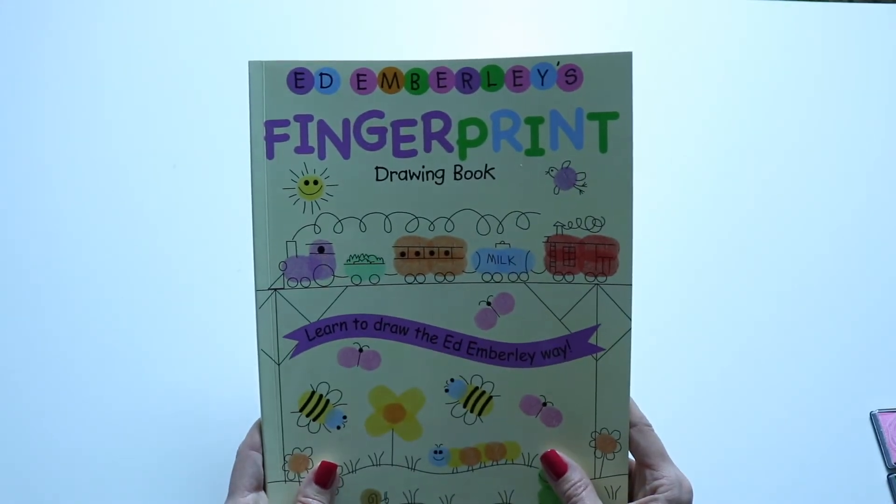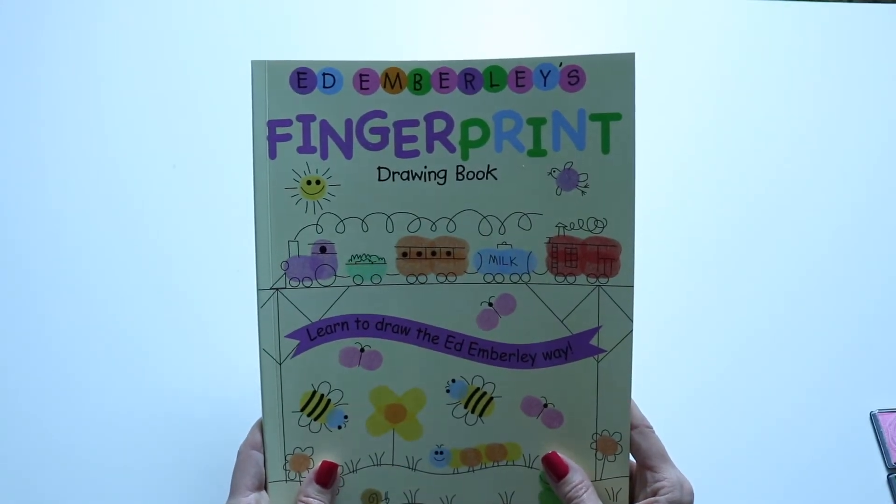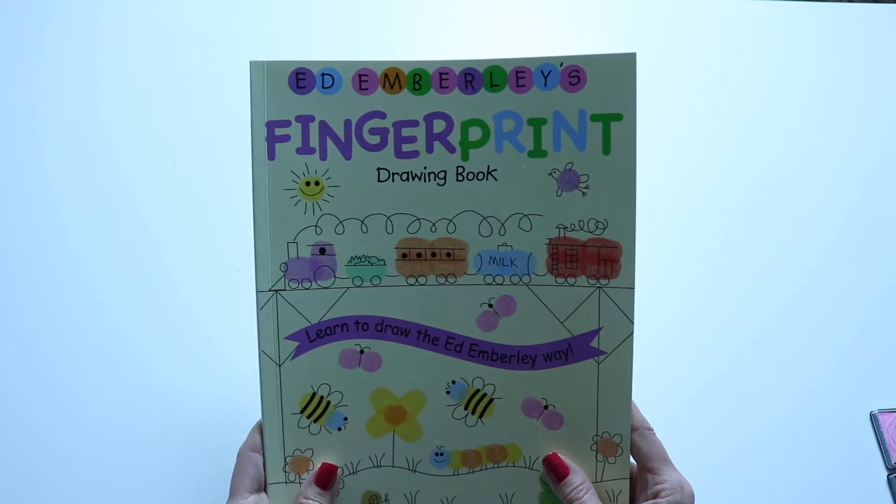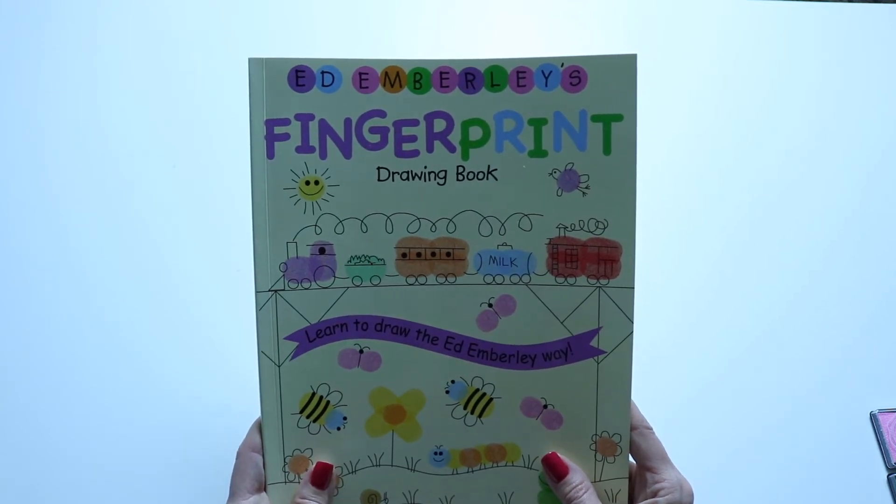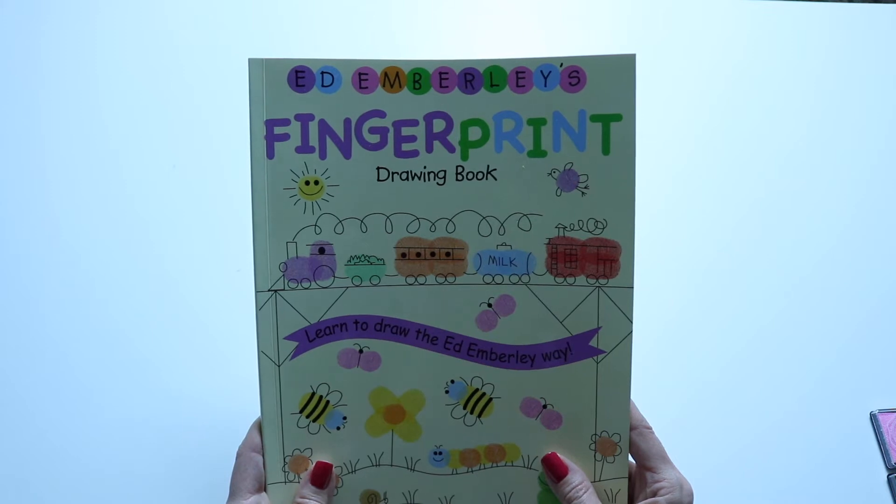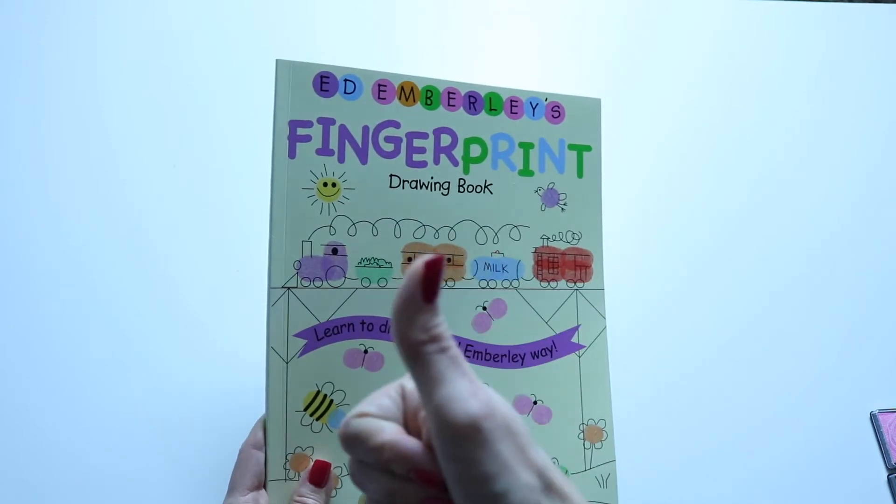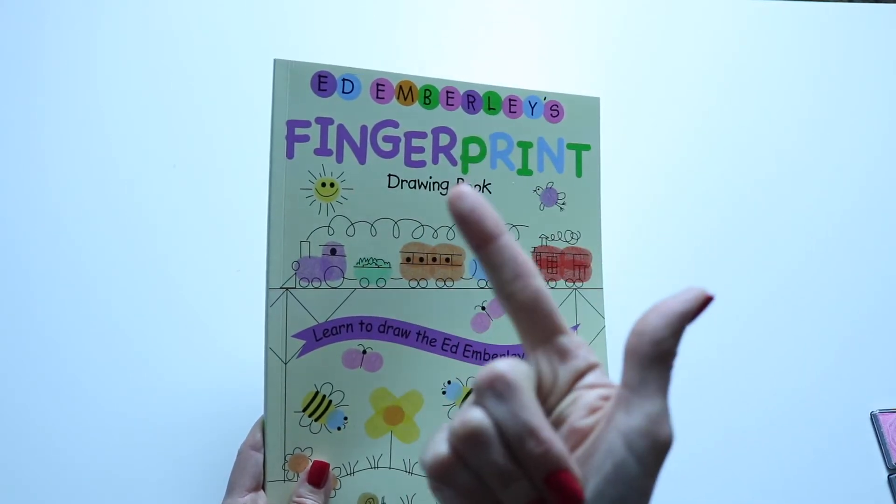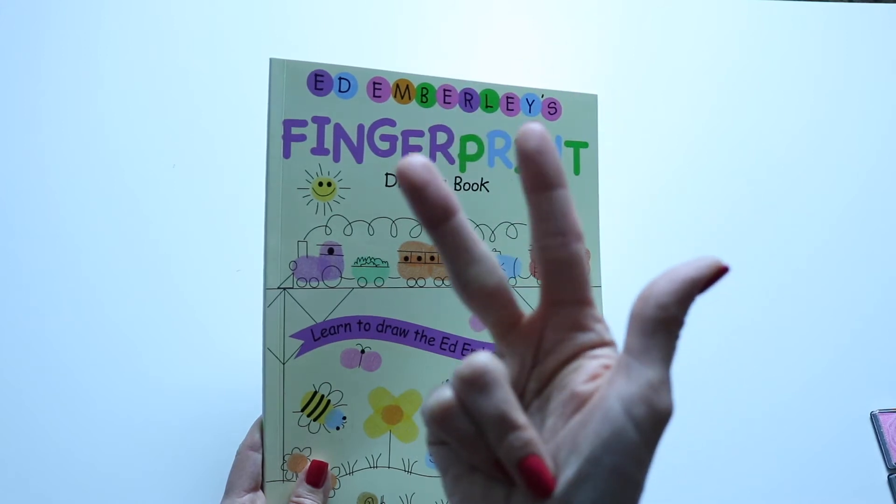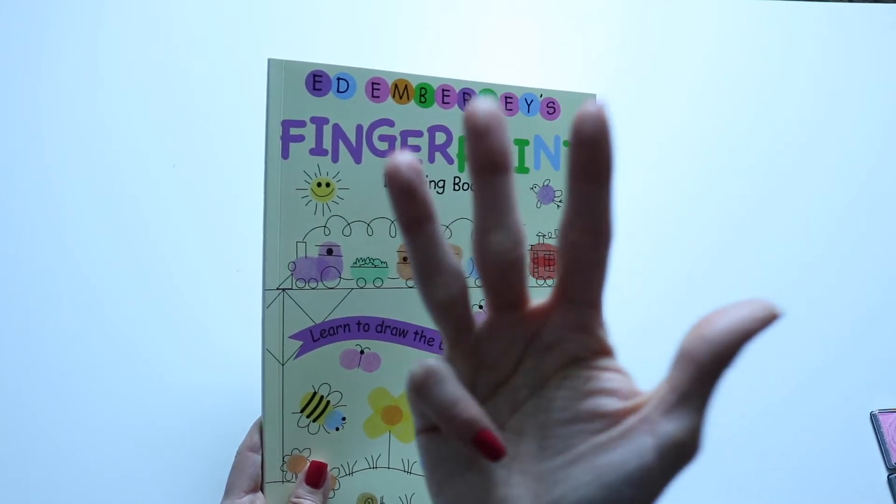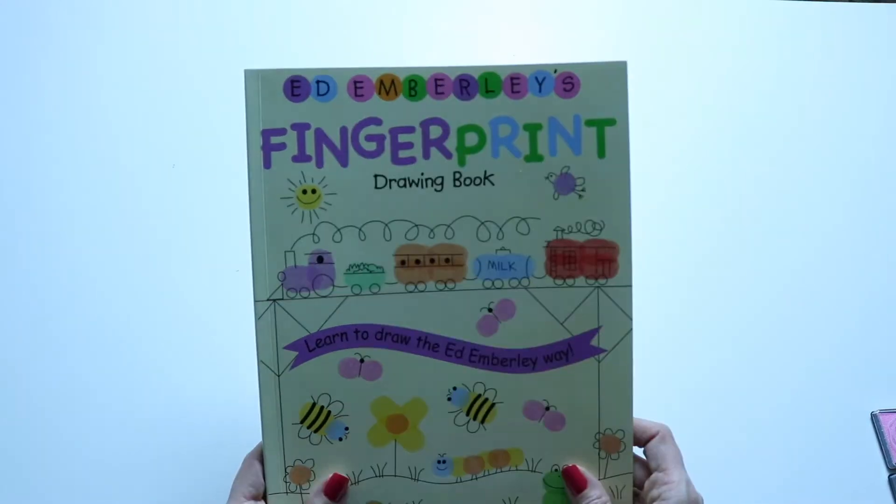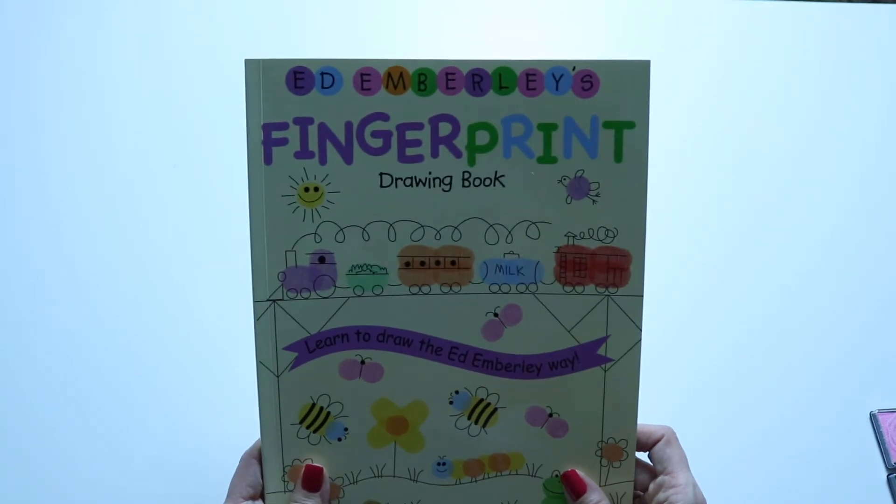These pictures will be based in our seasons. Who knows how many seasons we have? That's right, four. We have spring, summer, fall, winter. Four seasons. First, let's do a spring picture.